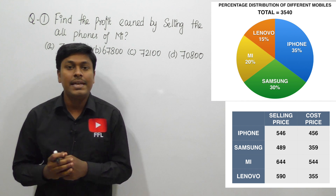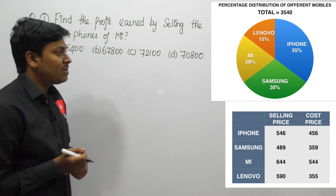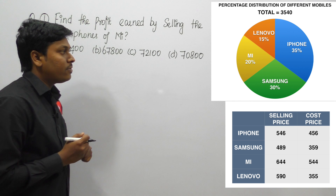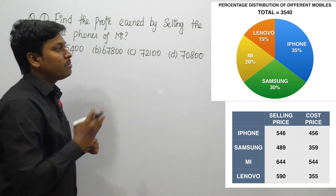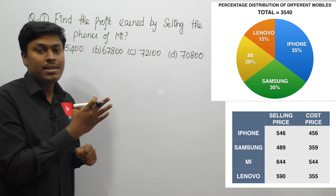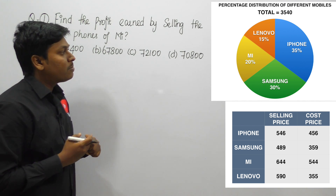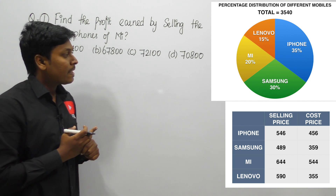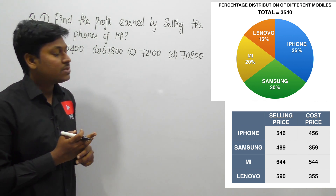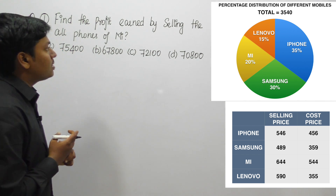Let me move on to DI number 13. Here they have given a pie chart and also a table chart. The pie chart talks about percentage distribution of different mobile phones — there are four different mobile phones and the total is 3540. The table chart gives the selling price and cost price of each phone. There are five questions based on these charts.